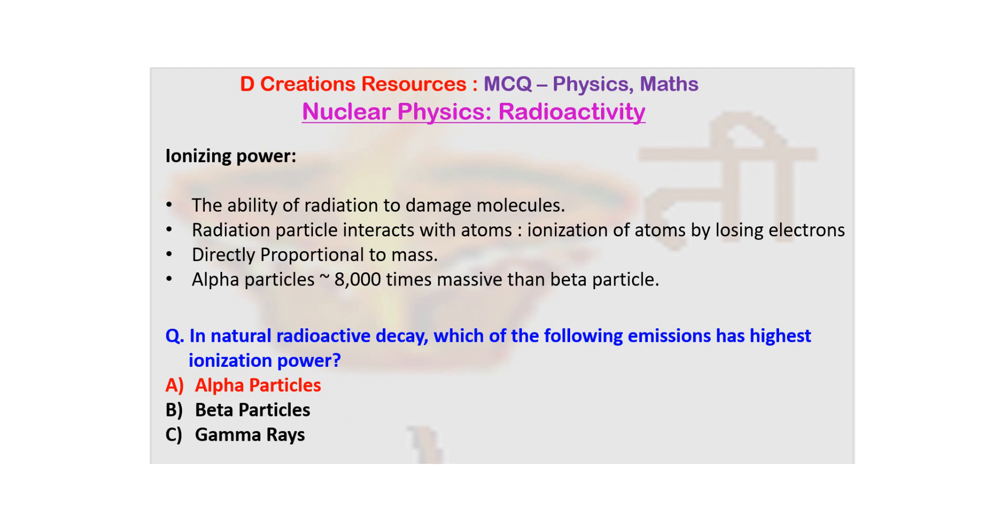And mass of proton itself is almost 2000 times mass of electron. So, mass of proton is almost 2000 times mass of beta particle and mass of alpha particle is four times that. That means mass of alpha particles is around 8000 times massive as compared to beta particle. So, obviously, it is going to have the highest ionization power.